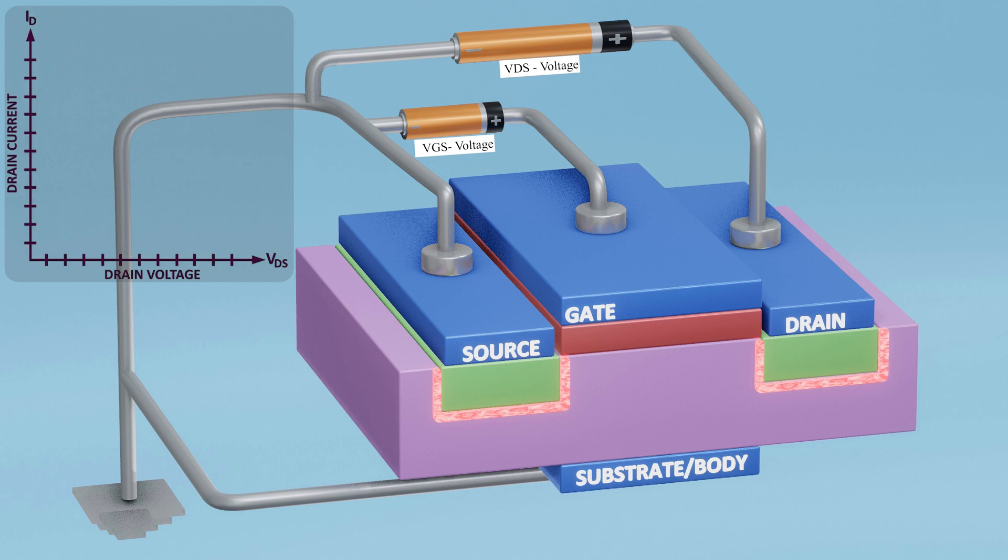The substrate of the MOSFET is a P-type semiconductor, which means the charge carriers are holes. However, there are also some free electrons present as minority charge carriers.